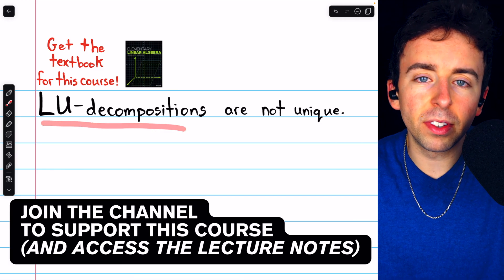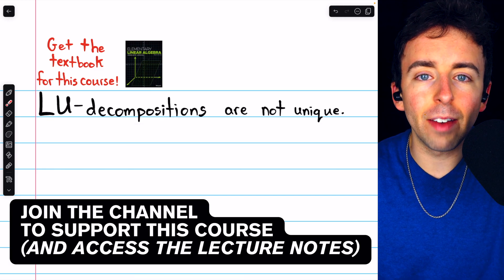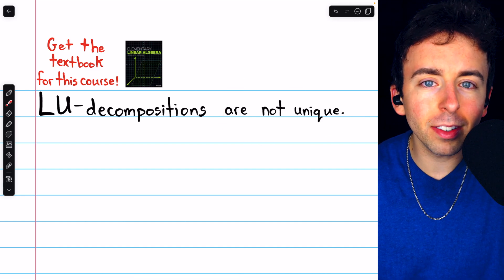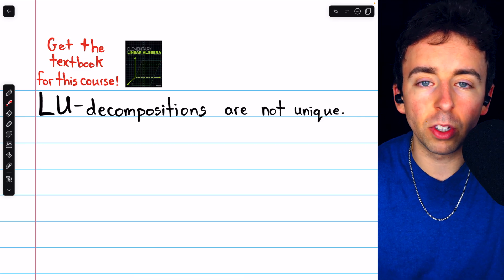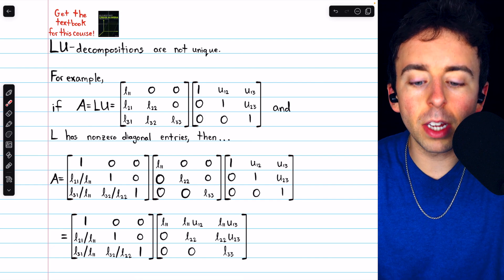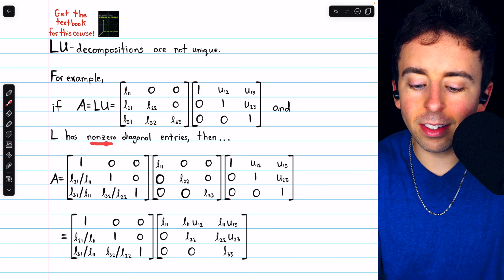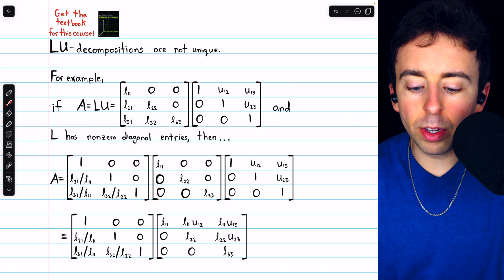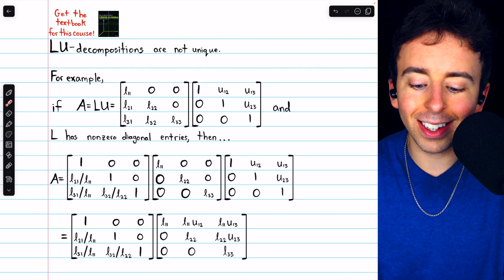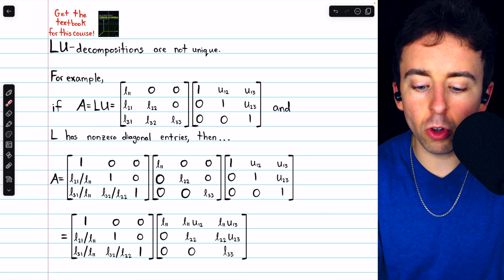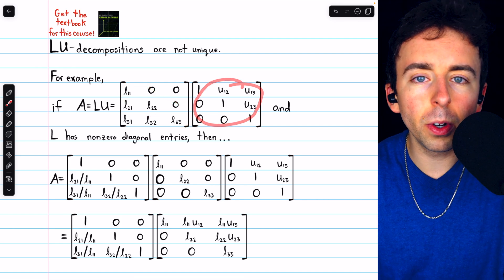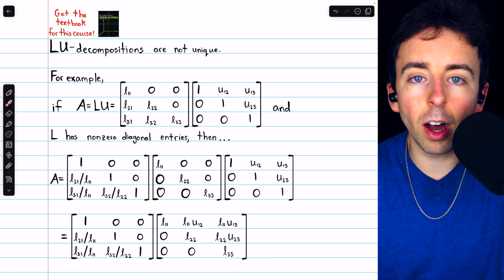When we introduced LU decompositions, we saw that they are not unique. We saw an LU decomposition of one matrix and then found another LU decomposition which was different. In general, it's easy to see that LU decompositions are not unique when the lower triangular matrix L has non-zero diagonal entries. If we have an LU decomposition of a matrix A where L has non-zero diagonal entries, we could shift those diagonal entries from L to U and thus obtain a distinct LU decomposition.